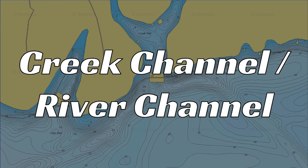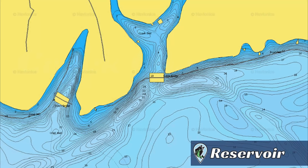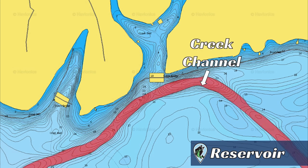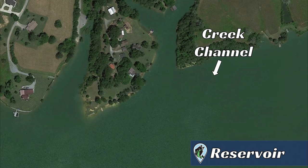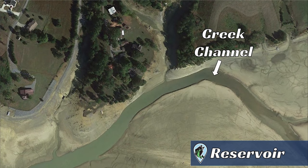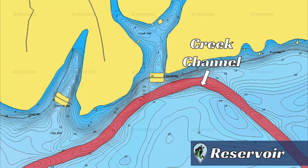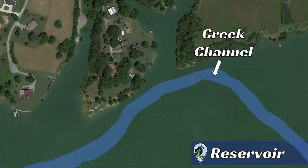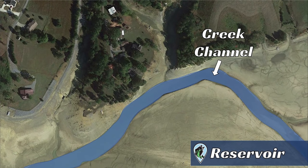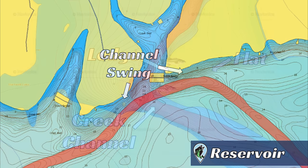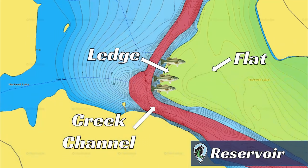Number five: Creek Channel or River Channel. The next type of structure is unique to reservoirs and is not found in natural lakes. Switching to Google Earth and taking the lake down 10 to 15 feet, we can clearly see the Creek Channel running through the middle of the lake. This is the old creek or riverbed that ran through this area before it was flooded or dammed up. You'll find Creek Channels on almost every single reservoir across the country, but not on natural lakes. I rarely fish the center of Creek Channels for bass — instead, I fish the different types of structures that are created as a result of Creek Channels existing in a lake.